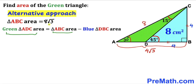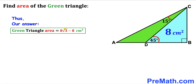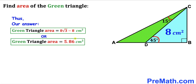Now for the final step: the area of the green triangle equals the area of triangle ABC minus the blue triangle area. Triangle ABC area is 8 times square root of 3, and the blue triangle area is 8, so the green triangle area is 8 times square root of 3 minus 8 centimeter square, which equals approximately 5.86 centimeter square. Thanks for watching and please don't forget to subscribe to my channel for more exciting videos. Bye!